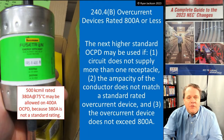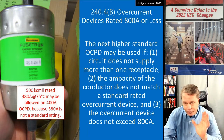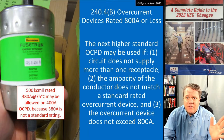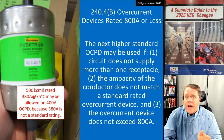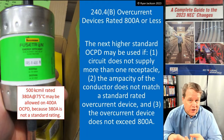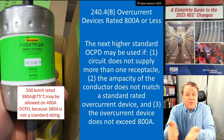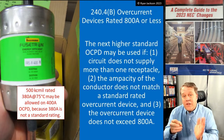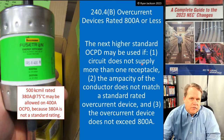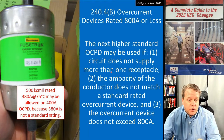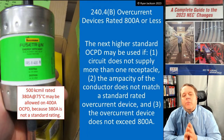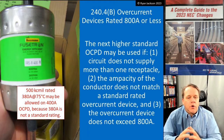The next higher standard overcurrent device can be used if the circuit does not supply more than one receptacle. Going back to 210.21, you can't have more than one outlet on a circuit rated more than 50 amps. So 240.4(B) basically applies above 50 amps up to 800 amps. Item one is rarely a problem. What you really need to understand is item two: you can use the next higher standard overcurrent device if the ampacity of the conductor does not correspond to a standard rating of overcurrent device.